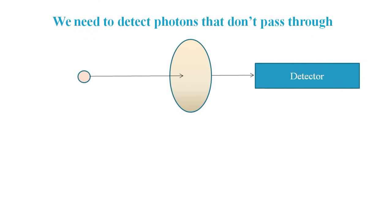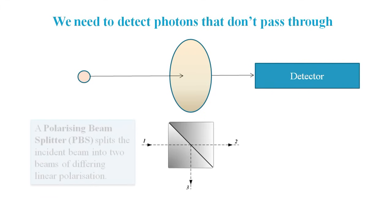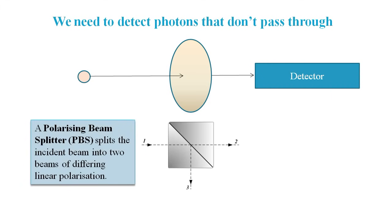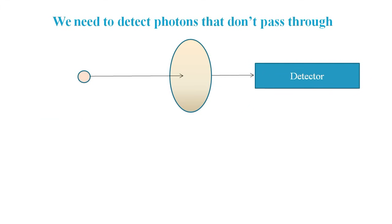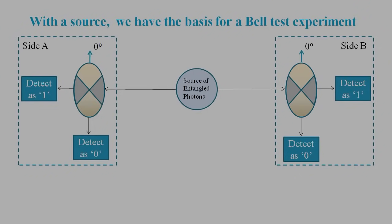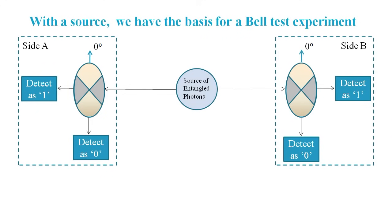But in order to do the Bell test properly, we need a way of counting the photons that don't pass through the filter. Fortunately, there's a device called a polarizing beam splitter that can do the job. It's not 100% efficient, but it's just about good enough for our purposes. So, with a polarizing beam splitter, we can identify photons that pass straight through as detected at one and reflected photons as detected zero. Now, if we include a source of entangled particles, we now have the configuration of a Bell test experiment.